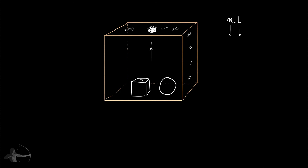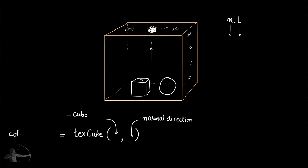To find which texel is hit by a given normal direction, we use the texcube function in the CG shader, which takes two arguments: the cube map (in this case the irradiance environment map) and the direction of the normal. This function returns the color of the texel where the normal hits. That is what the irradiance environment map is — we pre-compute and bake the map, then use it in our shader to calculate diffuse reflection.